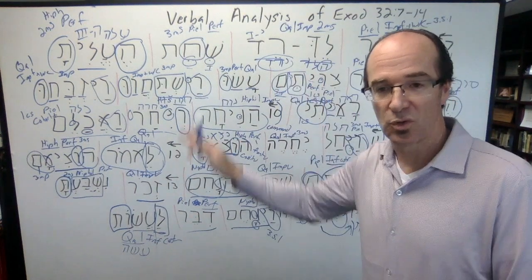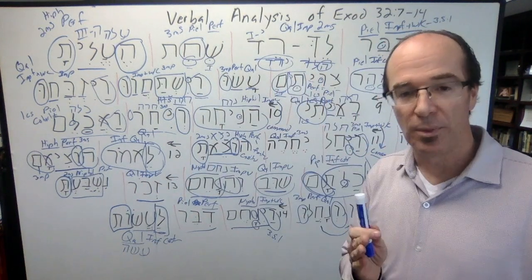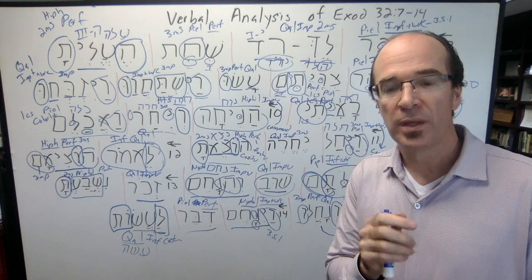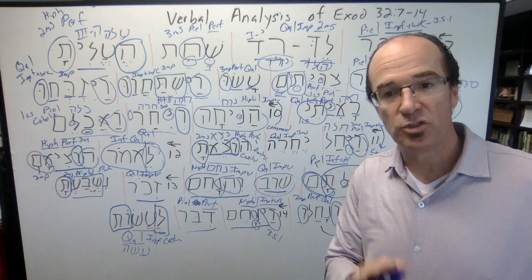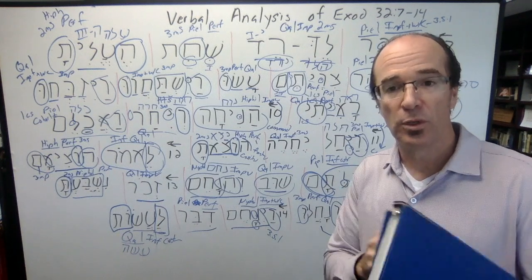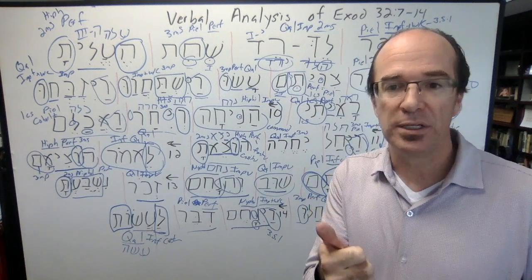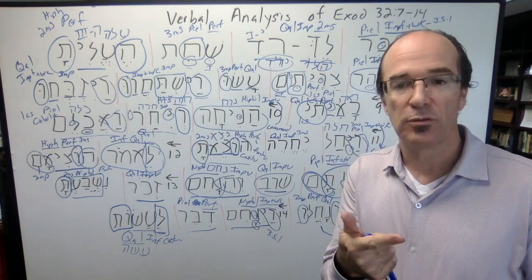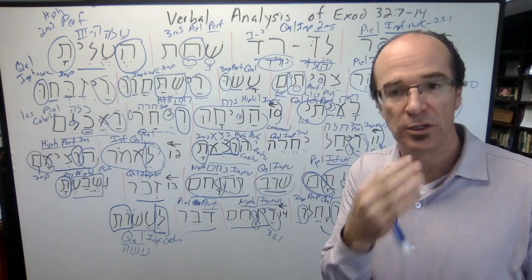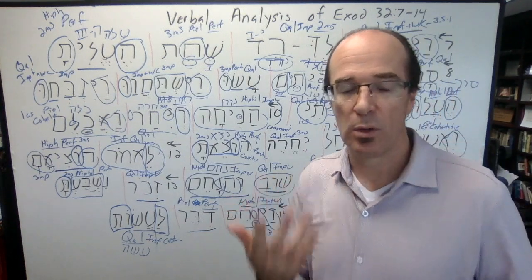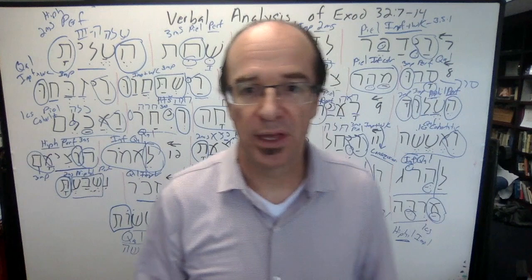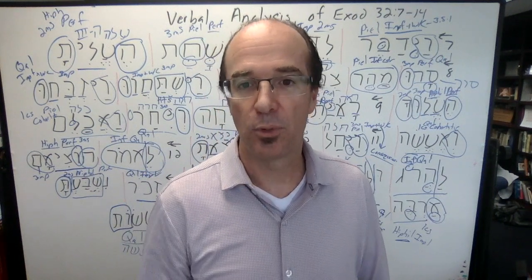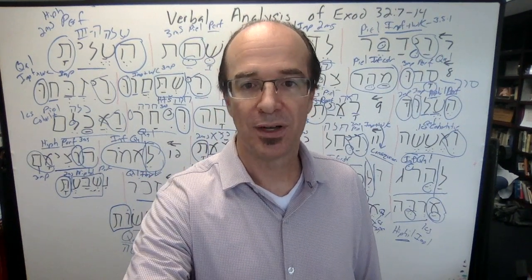I know the board looks quite scrambled now. I hope this walk-through helped you. Notice what I was doing for each verb: I went to Arnold Choi and said something about the binyan or stem and something about the verb type. Try to do that in your work. If you have any questions, let me know. I'm Brian Russell and it's my privilege to be your professor.